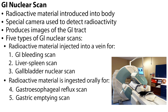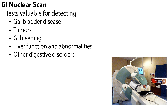In GI nuclear scanning, a small amount of radioactive material is introduced into the body, and a special camera is used to detect the radioactivity, producing images of the GI tract that can't be seen as well with standard x-rays. There are five types of GI nuclear scans. The radioactive material is injected into a vein for the GI bleeding scan, liver spleen scan, and gallbladder nuclear scan. It is ingested orally for the gastroesophageal reflux scan and gastric emptying scan. These tests are valuable for detecting gallbladder disease, tumors, GI bleeding, liver function and abnormalities, and other digestive disorders.